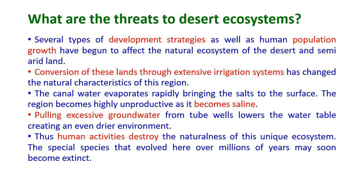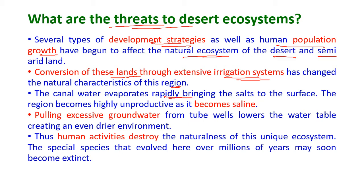Several types of developmental activities, such as human population growth, have begun to affect the natural ecosystem of the desert and semi-arid land areas. The conversion of these lands through extensive irrigation systems for agricultural purposes has changed the natural characteristics of this region. Canal water in this region evaporates rapidly, bringing salts to the surface.